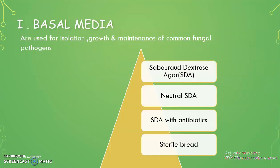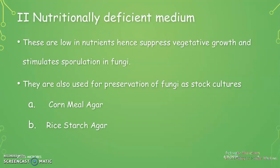First, we can see basal media. We have already heard about basal media in bacteriology — for example, nutrient agar or nutrient broth, which is a simple or basal media used in bacteriology. Similarly in mycology, we can see basal media for the isolation, growth, and maintenance of common fungal pathogens. Some important basal media are: Sabouraud Dextrose Agar (SDA), neutral SDA, SDA with antibiotics, and sterile bread.